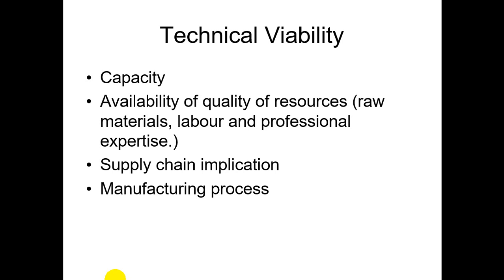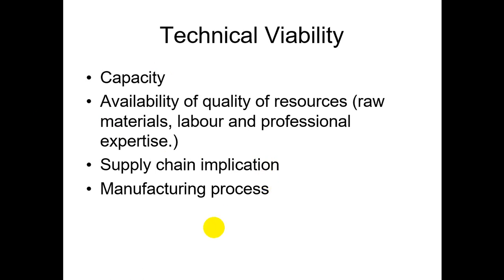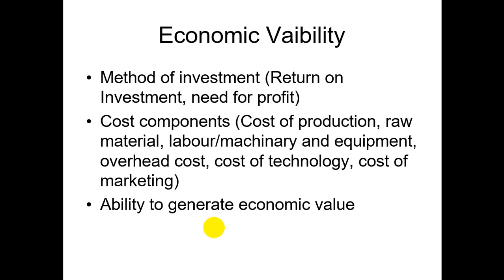Under technical viability, we must measure and plan our capacity of operations, machineries, systems, and processes. We also assess the availability and quality of resources — raw materials, labor, and professional expertise. Additionally, supply chain implications are considered: how the supply chain will be employed to reach our product to the end customer, as well as the manufacturing process.